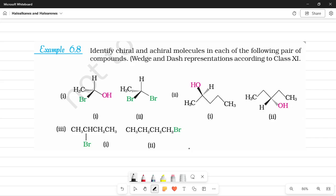Identify chiral and achiral molecules in each of the following pairs of compounds. A chiral molecule is the one which has a carbon atom with four different substituents. So essentially, the carbon atoms which have different substituents is going to be chiral and the one which does not have different substituents is going to be achiral.